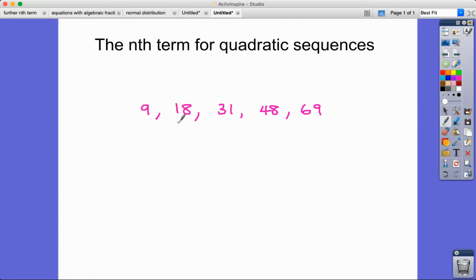And the difference between these terms, we've got 9, then we've got 13, then we've got 17, and then we've got 21. And so we might then investigate what the second row of differences is, which ends up being constant. Now as soon as you realize that you've got a constant second row of differences, then you know automatically that your nth term is going to involve n squared.